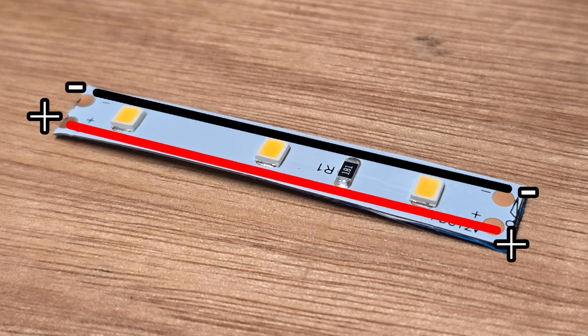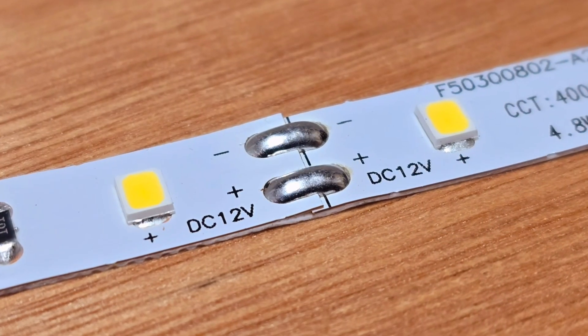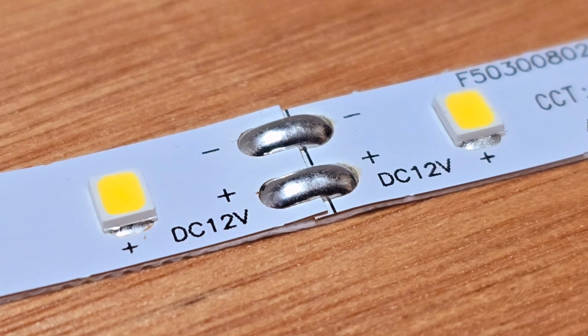Notice that this is a DC circuit and so keeping that polarity correct is really important when we connect the strip up, but also if we ever need to extend the strip or take it around a corner. More on that in a future video.